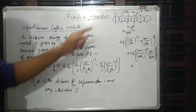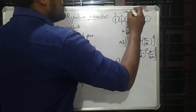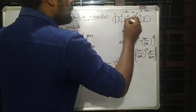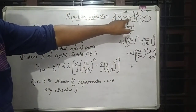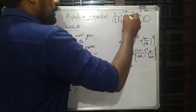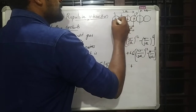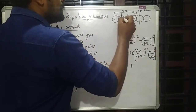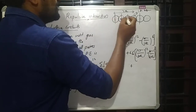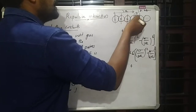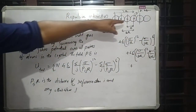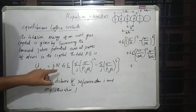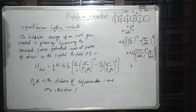When considering the i-th atom, if we then consider another atom as reference, the interaction between that atom and the i-th atom has already been counted. Due to this pairing process, if there are N atoms, we only need to count N over 2 interaction energies total.